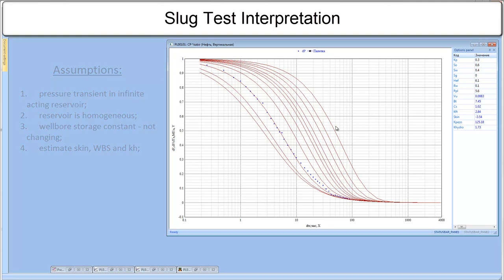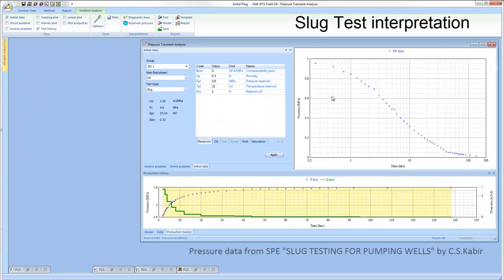For this purpose, we launch a well-test analysis module, where we observe the same diagnostic semi-log plot with real slug-test data plotted as points. And on the bottom plot, pressure and fluid flow rate in linear scales.